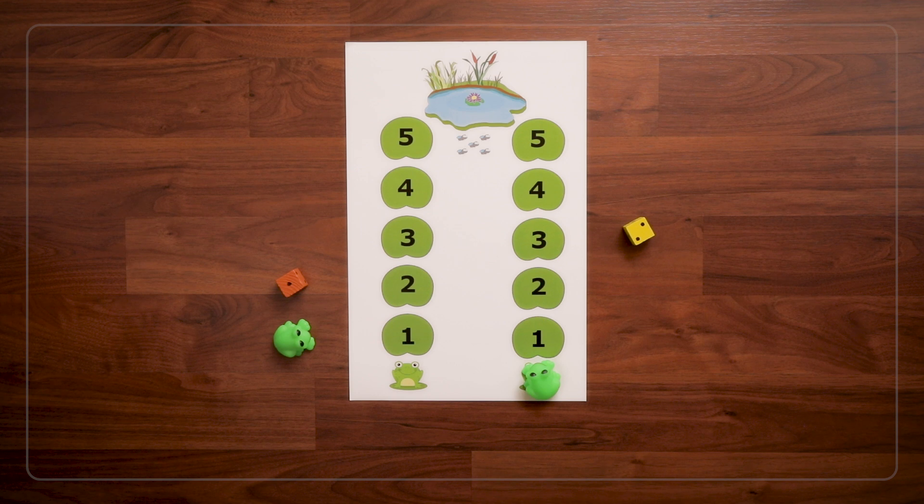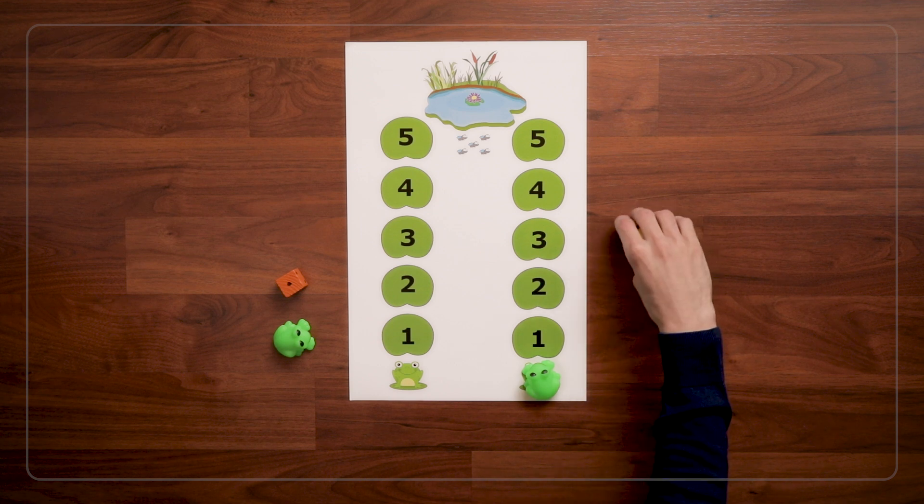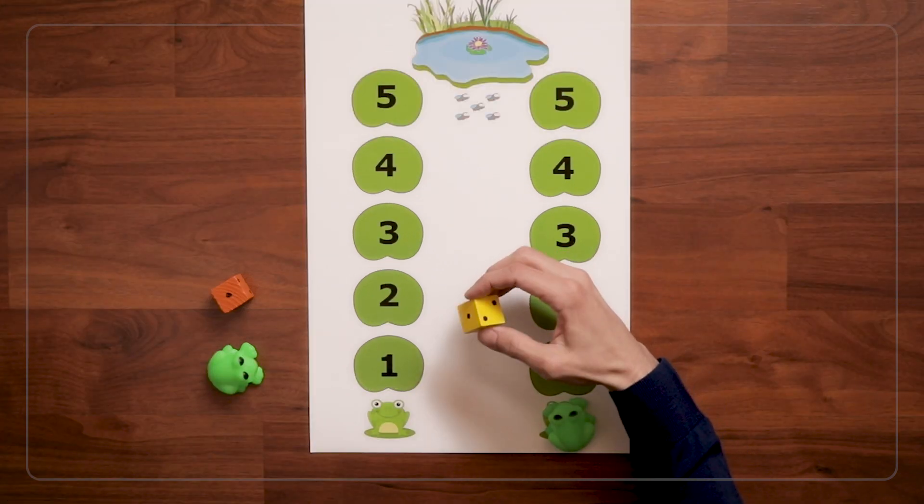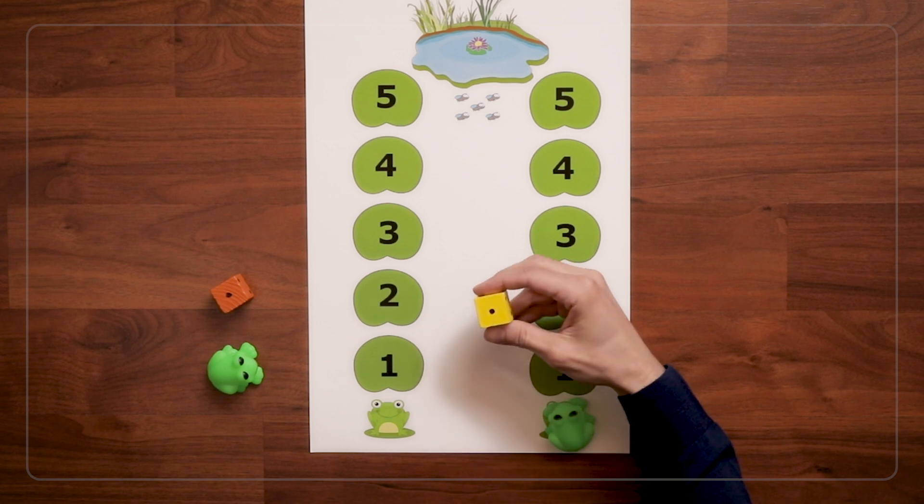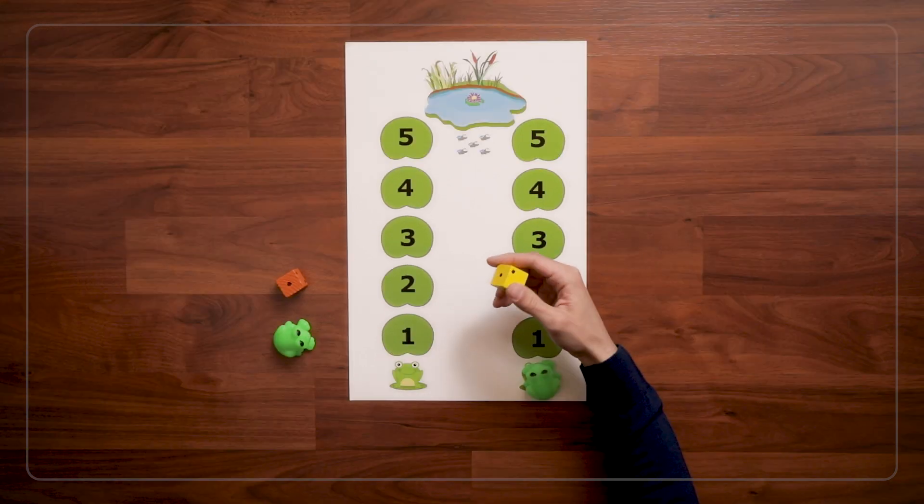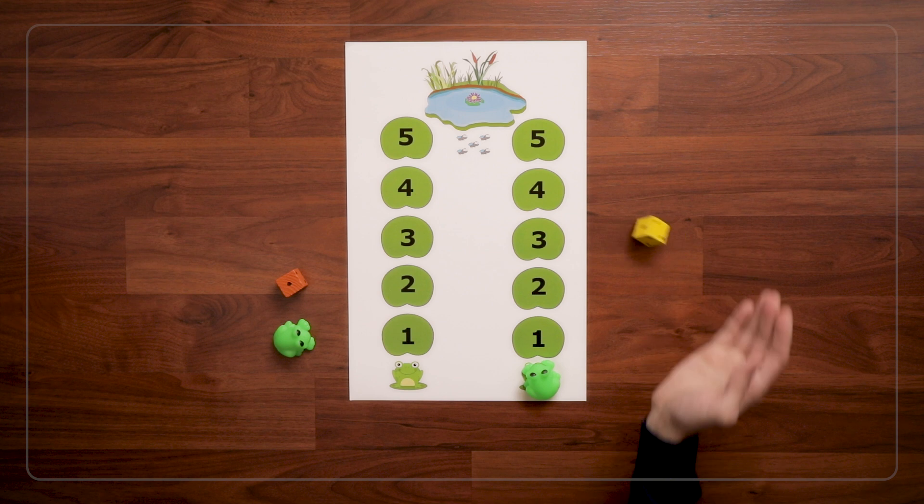Then when you're ready, roll the die. In this case, we have a die that only has 1s and 2s on it. Because at first, we really want to focus on those small numbers with kids. So, I roll, and I get a 2.